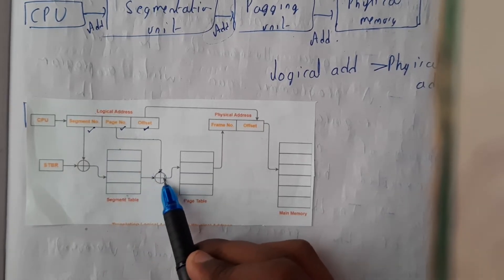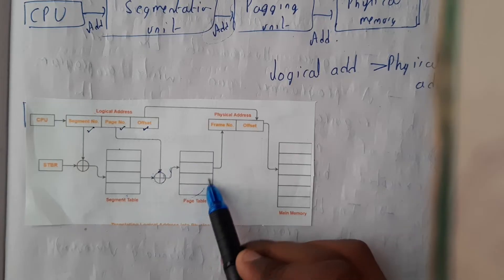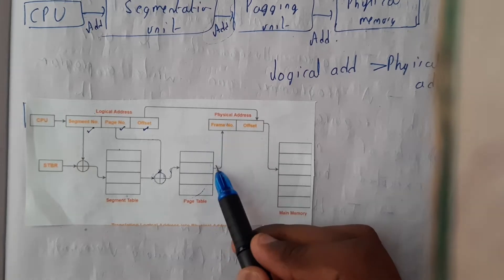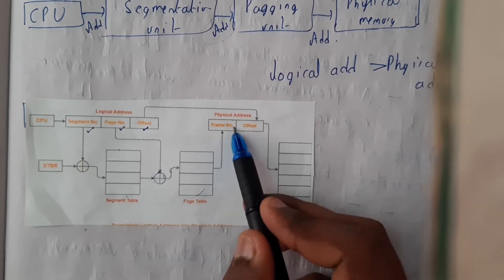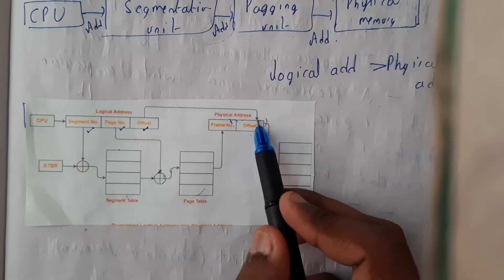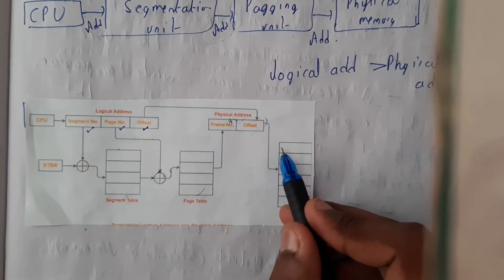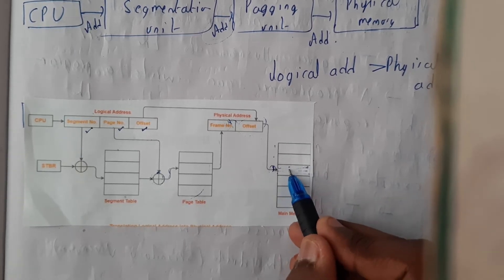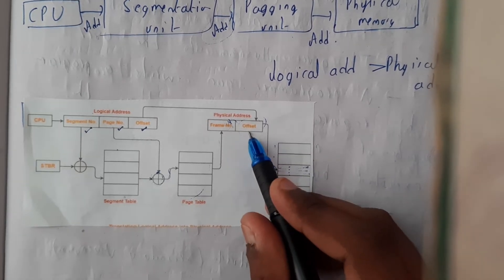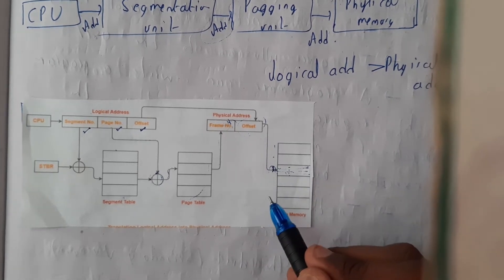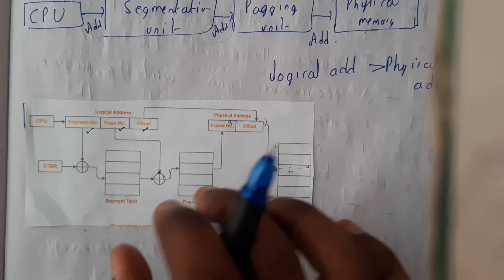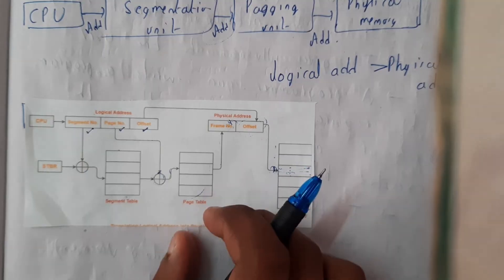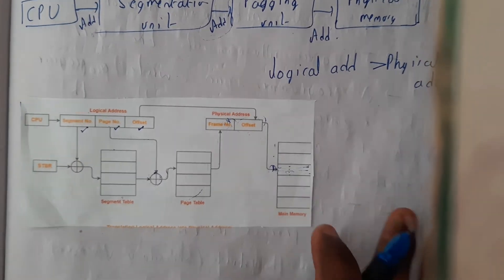Similarly, you carry the page number and combine it, finding that particular page table's value. Now you get the frame number, and you substitute it — so you have the frame number and the offset. For example, in the third frame at offset three, you can find the data at that spot. This process is segmentation with paging: initially you do the segmentation, get the value, pass it to the page table, and at the end you get the physical address.